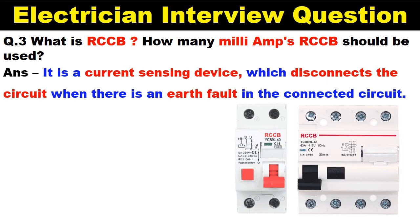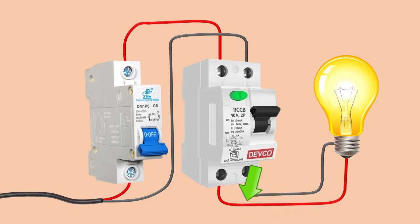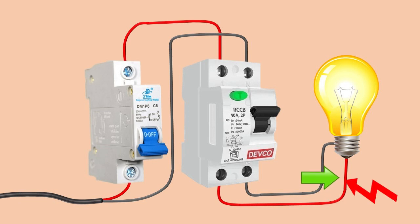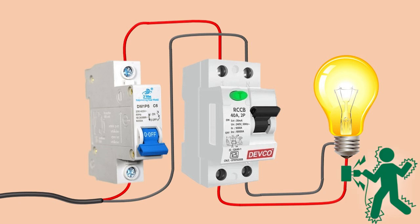Let us understand the meaning of this. From the outgoing terminals of the RCCB, whatever load we connect — among those terminals, if on any wire or on a single load any kind of earth fault occurs, current starts flowing into the ground. In this condition, this RCCB will break the power supply. So we can also say that this RCCB saves us from electric shocks.